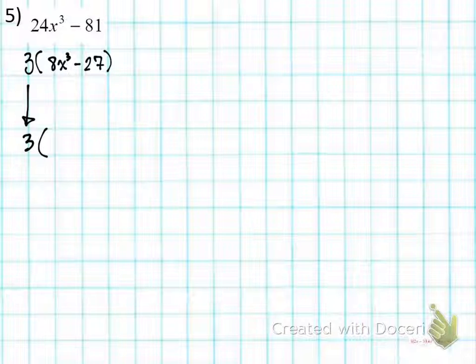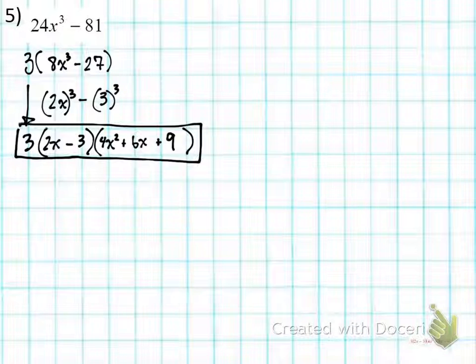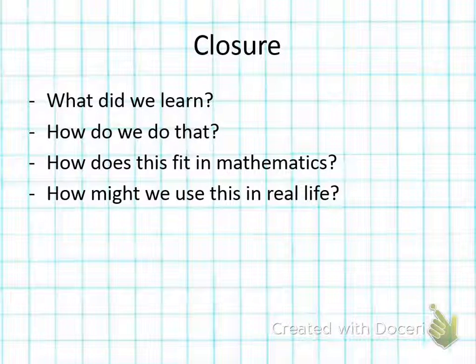So your final answer should be, you should have two parentheses. Your sign should look like this. You should have a negative. I know that 8x³ is like saying 2x to the third power, and 27 is like saying 3 to the third power. So we just write these down. There you go. Any questions on numbers 1 or 2? I mean, number 5. Any questions on 5? Okay, great. That concludes the lesson. I'd like you to discuss these questions now.